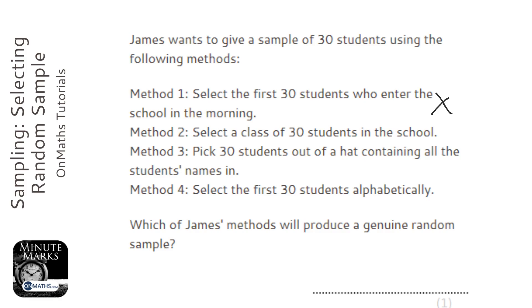Method two: select a class of 30 students in the school. Again, they will all be in the same class, so the same year group and maybe the same ability — so cross that out.